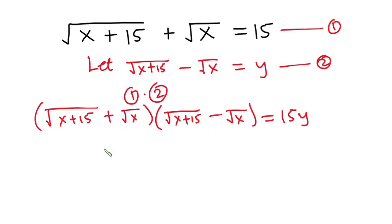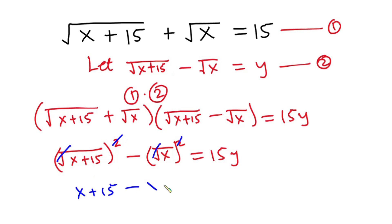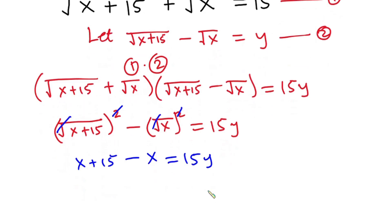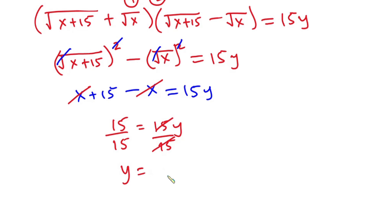On the left-hand side we have a difference of two squares, so we can write it as [square root of (x + 15)]² minus [square root of x]², which equals 15y. The squares cancel the square roots, giving us (x + 15) minus x equals 15y. The x terms cancel, leaving 15 = 15y. Dividing both sides by 15, we get y = 1.